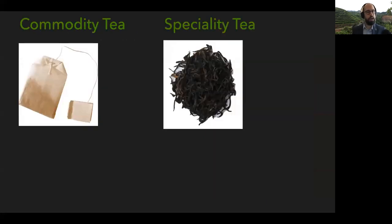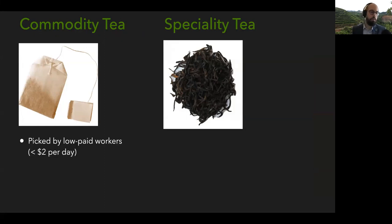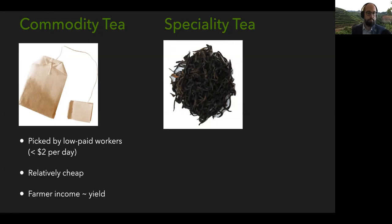We can subdivide tea into commodity tea and specialty tea. Commodity tea includes things like bottled ready-to-drink tea, bagged tea, or instant tea. It's generally picked by relatively low-paid workers, often earning poverty wages. It's relatively cheap — a tea bag is probably five or ten cents in bulk. For this type of production system, it's really all about yield; maximizing yield is the best way to maximize farmer income.